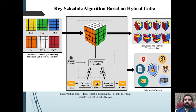The key scheduling algorithm will generate the key for the encryption process, which can be easily attacked using brute force, because cryptanalysis continuously tries all possible combinations to get the original text. The size and number of sub-keys depend on the design of the cipher.